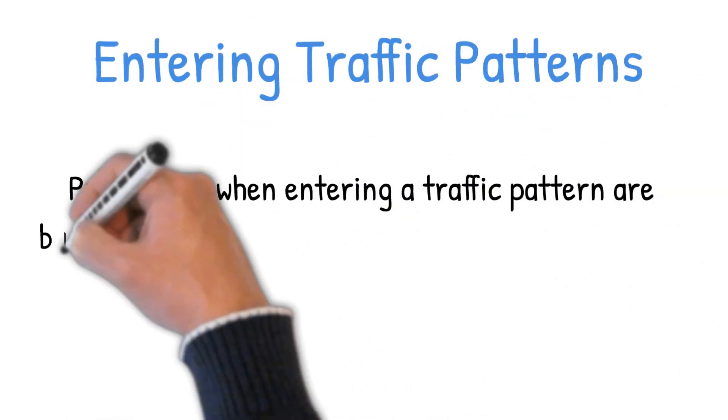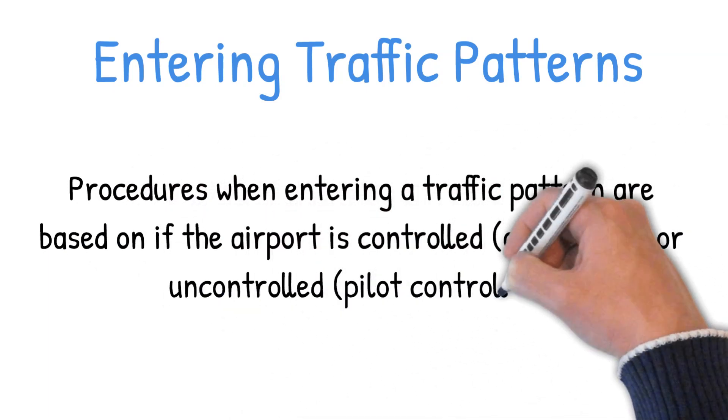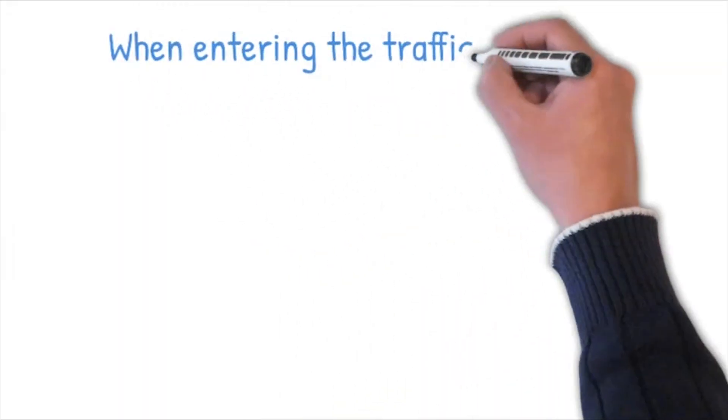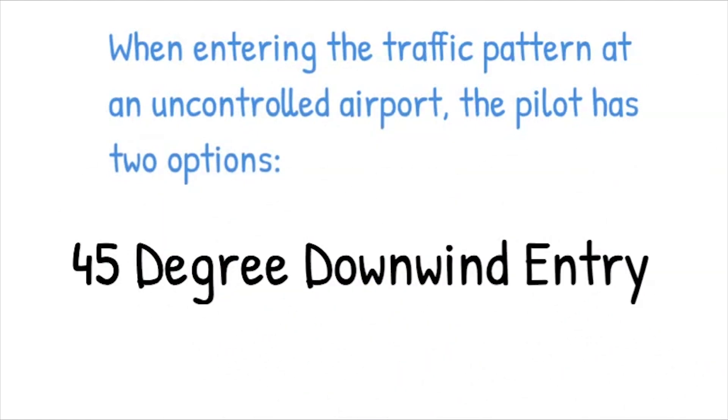Entering traffic patterns. Procedures when entering a traffic pattern are based on if the airport is controlled or uncontrolled. When entering the traffic pattern at an uncontrolled airport, the pilot has two options. The first option is known as a 45-degree downwind entry.